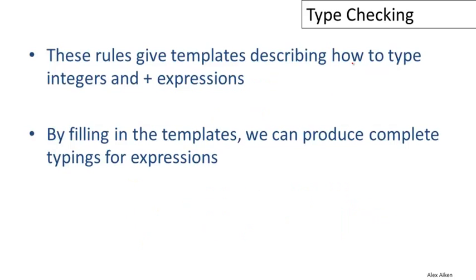These rules give templates for describing how to type integers and expressions. The rule for integer constants uses a generic integer i—it doesn't give a separate rule for every possible integer. The rule for plus uses expressions E1 and E2 without specifying particular expressions. We can plug any expressions we want that satisfy the hypotheses and produce a complete typing for actual expressions.